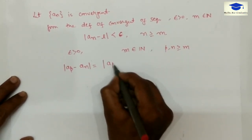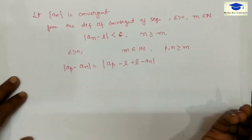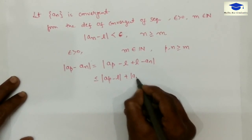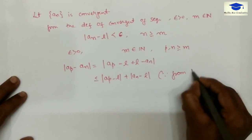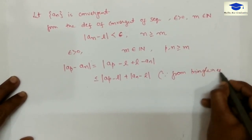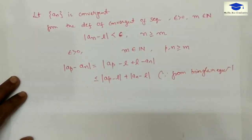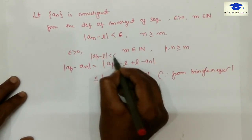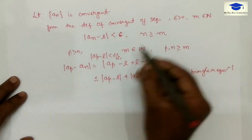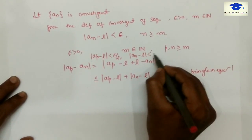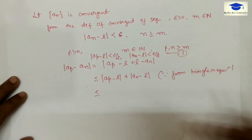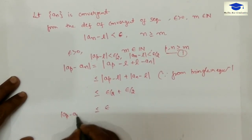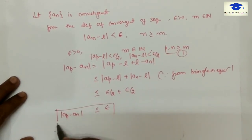Now adding and subtracting the real number l, and applying the triangle inequality, we can write the distance between a_p and a_n as less than or equal to |a_p - l| plus |a_n - l|. Since the sequence is convergent, for all p and n greater than m, each of these terms is less than epsilon by 2. Therefore the distance between a_p and a_n is less than epsilon, which is the definition of a Cauchy sequence.